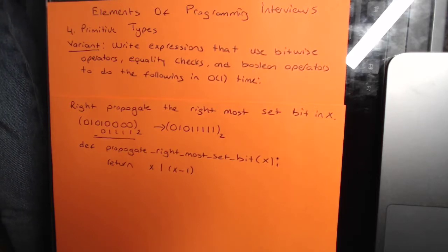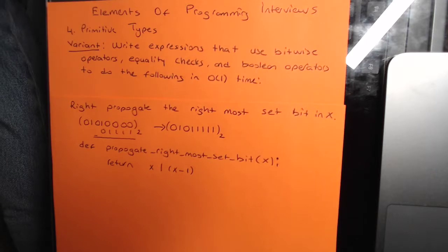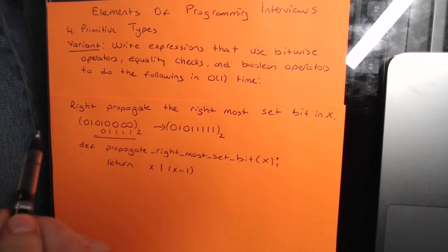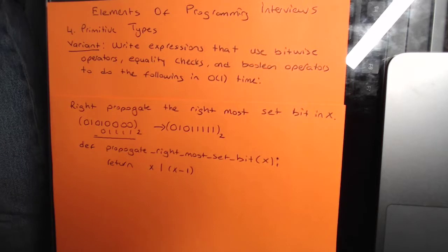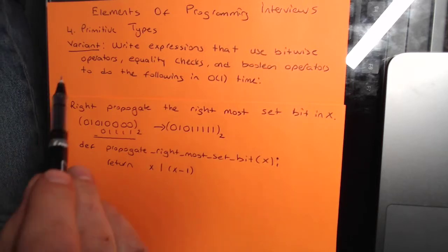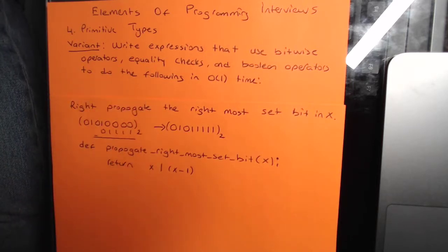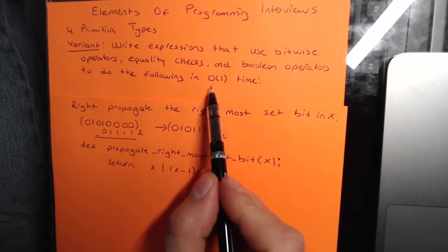Write expressions that use bitwise operators, equality checks, and Boolean operators to do the following in O(1) time. The first variant question asks us to propagate the rightmost set bit in X using only bitwise operators, equality checks, and Boolean operators in constant time.